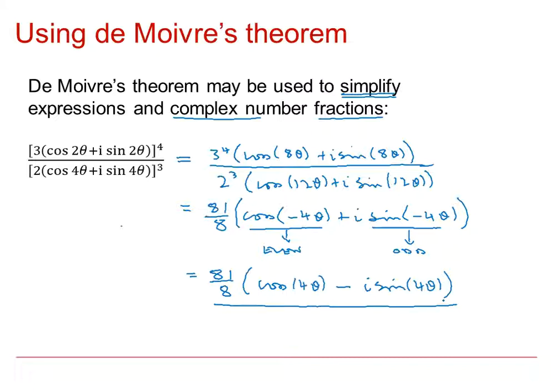Do notice though that that answer is not in modulus argument form because of the minus sign in the middle. So we mustn't say that the argument of this answer is 4 theta. The argument of the answer is the minus 4 theta that we had on the previous line. So do notice we have inherited this minus sign in our solution.